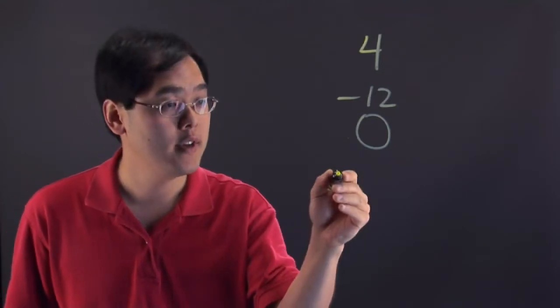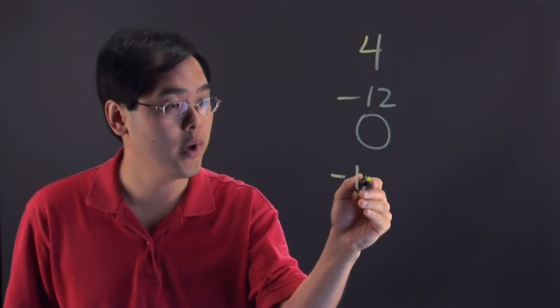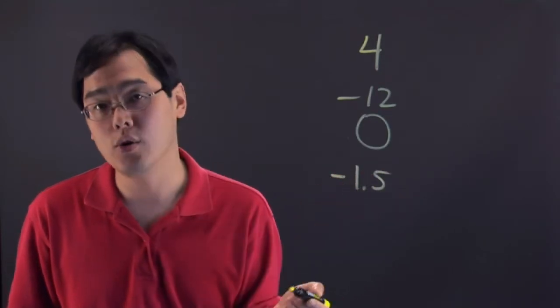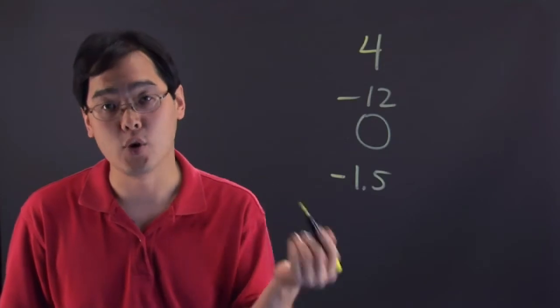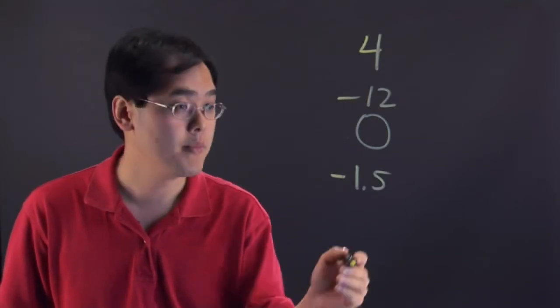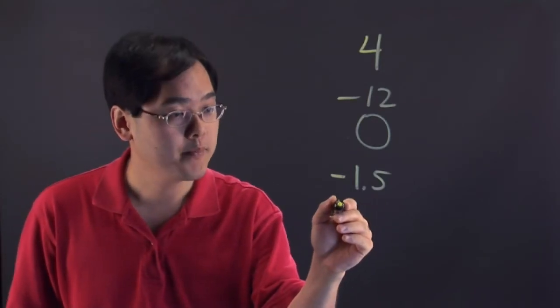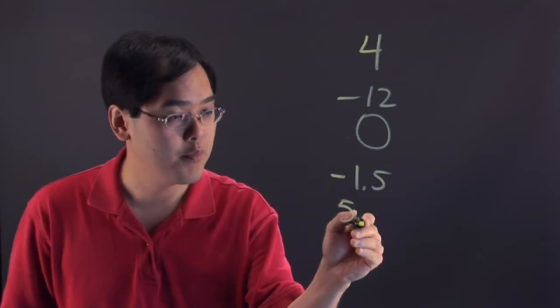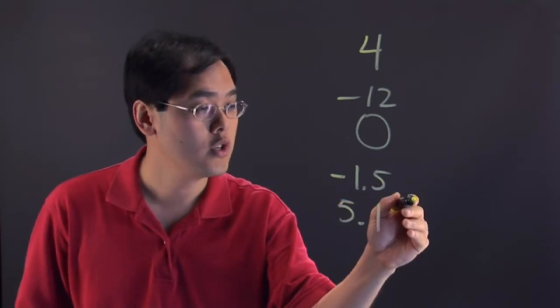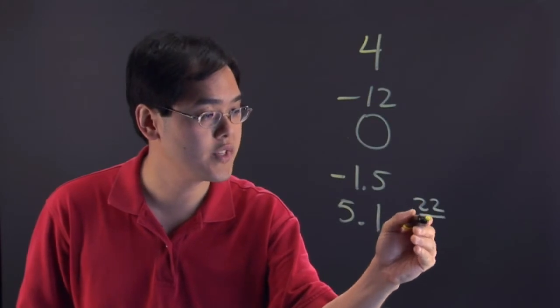Well, if you have negative 1.5, because that's not a whole number, it's only a number, it's not an integer. If you have, let's say, 5.1 or 22 over 7,